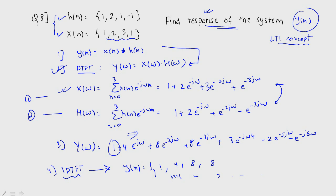So 4, 8, 8, then you have 3, minus 2, minus 1. You can get the same answer using the linear convolution. You can do the matrix multiplication. You can do anything but you will get the same answer.